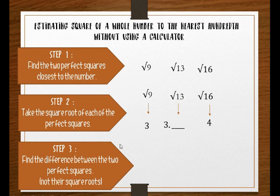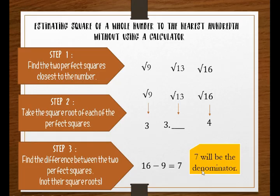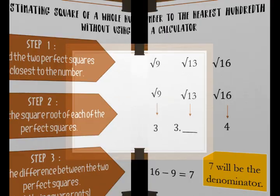Step three: find the difference between the two perfect squares. The two perfect squares are 16 and 9, not their square roots. So 16 minus 9 equals 7, and 7 will be the denominator of the fraction that we will find later.